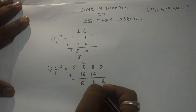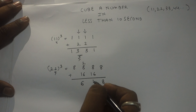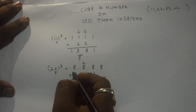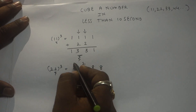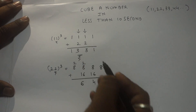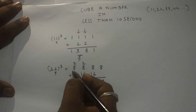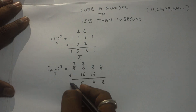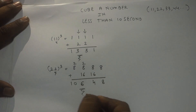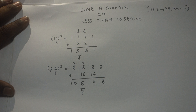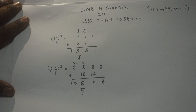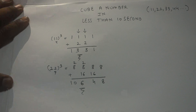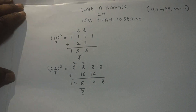The last step: 8 plus 2 carry is 10. So when you multiply 22 × 22 × 22, you get the answer 10648. That is 22 cubed equals 10648. I hope you understood the second example.